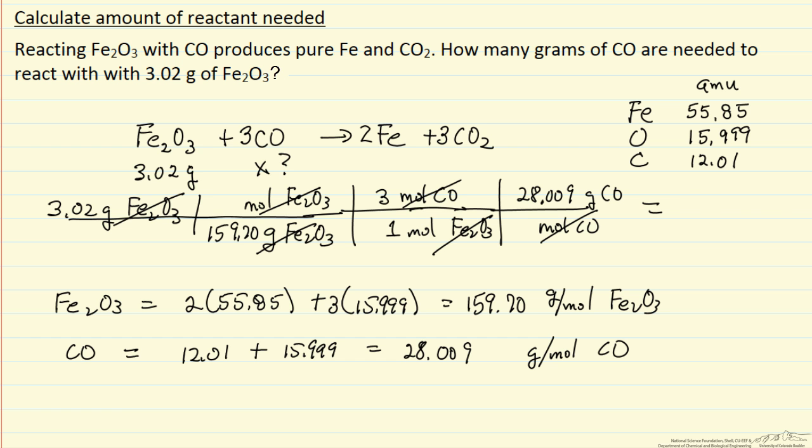So let me do this calculation. This is grams of CO, and that's what we want to calculate. Considering significant figures, this should be probably 1.59 grams of carbon monoxide needed to react with the iron oxide.